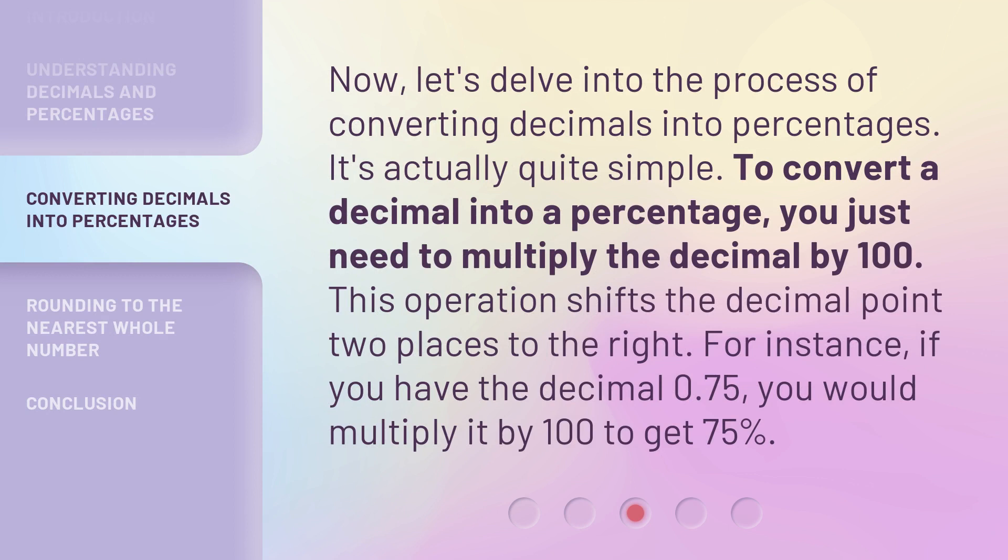Now, let's delve into the process of converting decimals into percentages. It's actually quite simple. To convert a decimal into a percentage, you just need to multiply the decimal by 100. This operation shifts the decimal point two places to the right.